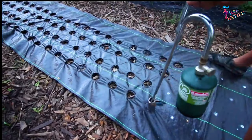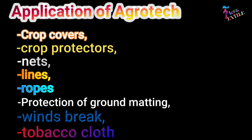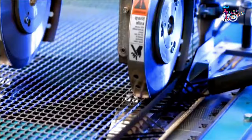Applications of agrotech include crop covers, crop protectors, nets, lines and ropes, protection of ground matting, windbreaks, and tobacco cloth, among others.